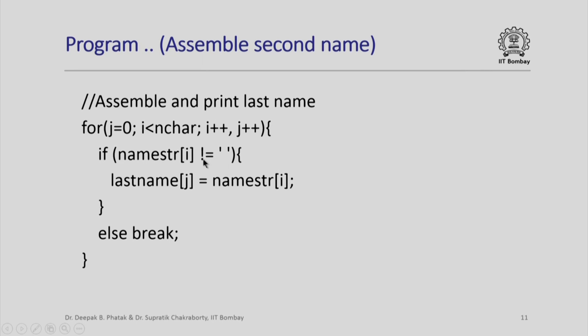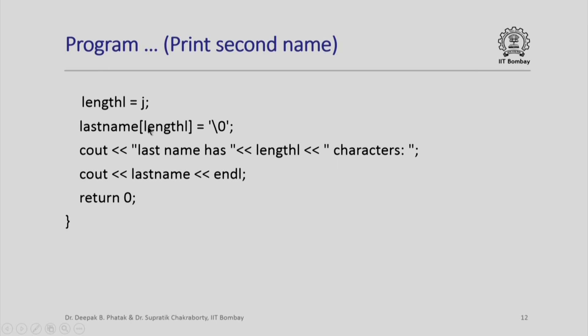As usual, if I encounter a blank, I will go out of the loop using the break. I will set length l as j, put a backslash 0 as the last element, and print the last name has so many characters and this is the value of the last name.